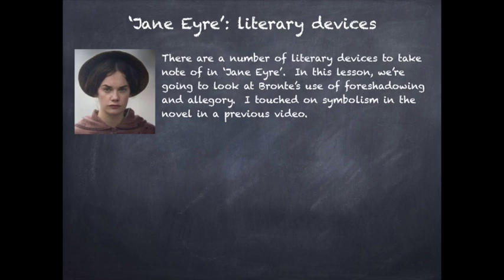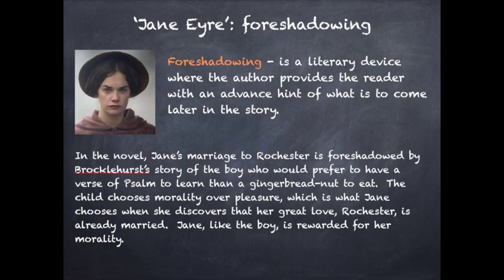Foreshadowing is a literary device where the author provides the reader with an advanced hint of what is to come later in the story. In the novel, Jane's marriage to Rochester is foreshadowed by Brocklehurst's story of the boy who would prefer to have a verse of psalms to learn rather than a gingerbread nut to eat. The child chooses morality over pleasure, which is what Jane chooses when she discovers that her great love, Rochester, is already married. Jane, like the boy, is rewarded for her morality.